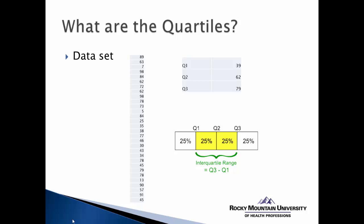Usually we think of there being three quartiles: the first quartile, the second quartile, and the third quartile. These three quartiles allow us to break the distribution of scores into quarters. In other words, the lowest score to the first quartile represents 25% of the curve, between the first and second quartile represents another 25%, and so on — giving us markers that break the distribution into quarters.